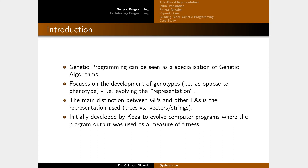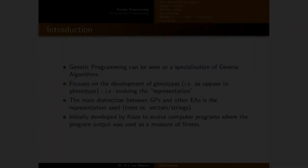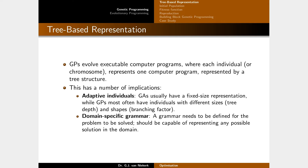Genetic programming can be seen as a specialization of genetic algorithms — it follows that pattern pretty much exactly. The only difference is in the representation: instead of using a binary string or an array of floats or integers, we use trees to represent individuals. It was initially developed to evolve computer programs, where the program output was used as the measure of fitness. GP is used to evolve executable computer programs where each individual represents one such program, represented by a tree.